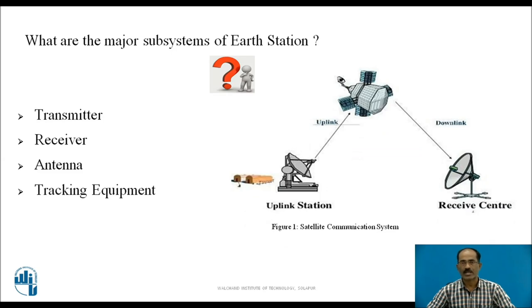This pictorial representation of the satellite communication system consists of two Earth Stations — one transmitting Earth Station and one receiving Earth Station — and a satellite. The signal transmitted from the Earth Station to the satellite is called the uplink, and the signal from the satellite to the Earth Station is called the downlink. The satellite acts as a repeater, which takes the signals, amplifies them, removes noise, and retransmits them. Direct communication between the two Earth Stations is not possible because for longer distances the two antennas are not within direct line of sight.